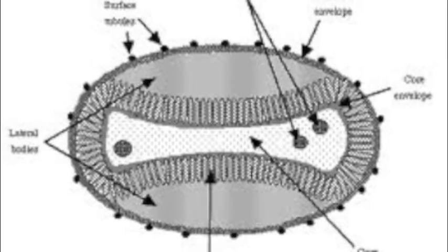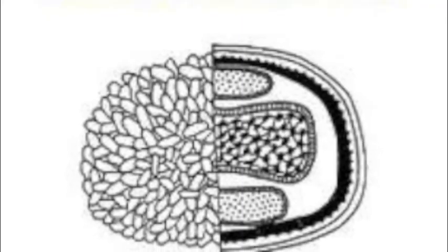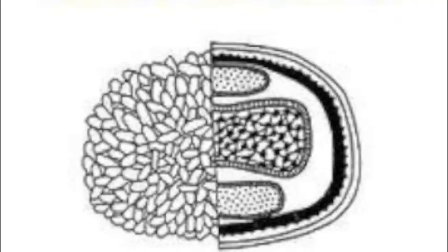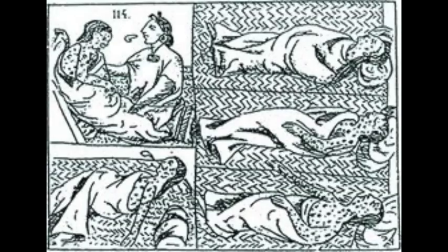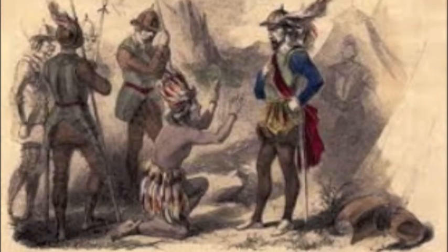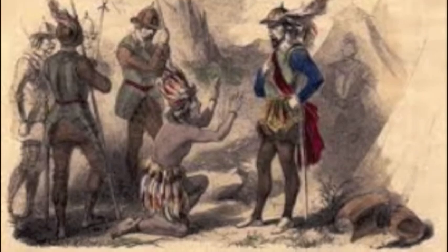The worry isn't that smallpox will escape; it's that it will be used as a weapon. There is already evidence that the Soviet Union experimented with smallpox as a weapon. In the 1500s, when the conquistadors came to the Americas, they brought with them smallpox as a weapon. The Native Americans had no defense against it — they had never been exposed to it. Smallpox burned through their population, killing many. Without it, the Spanish never would have been able to conquer the Incas and the Aztecs.